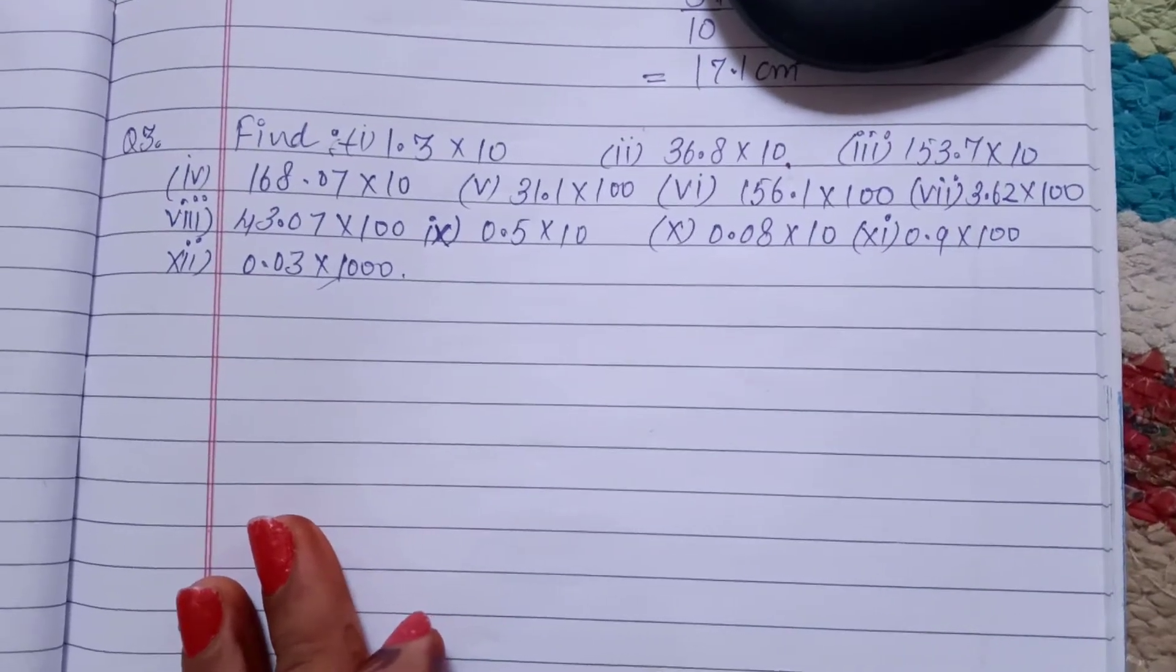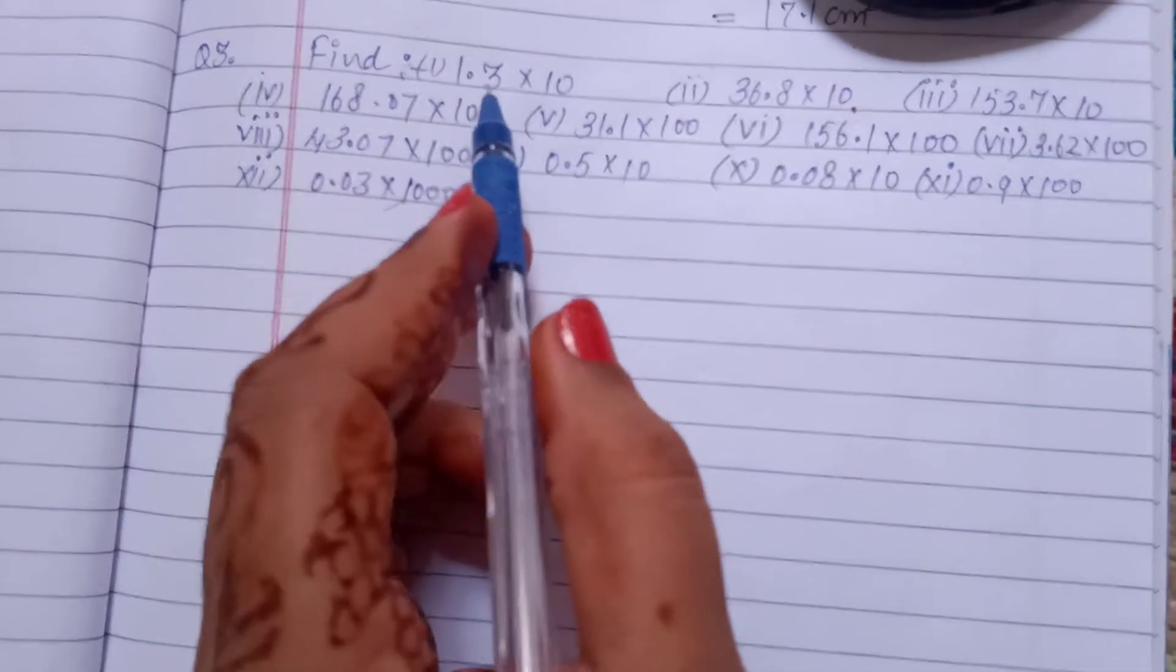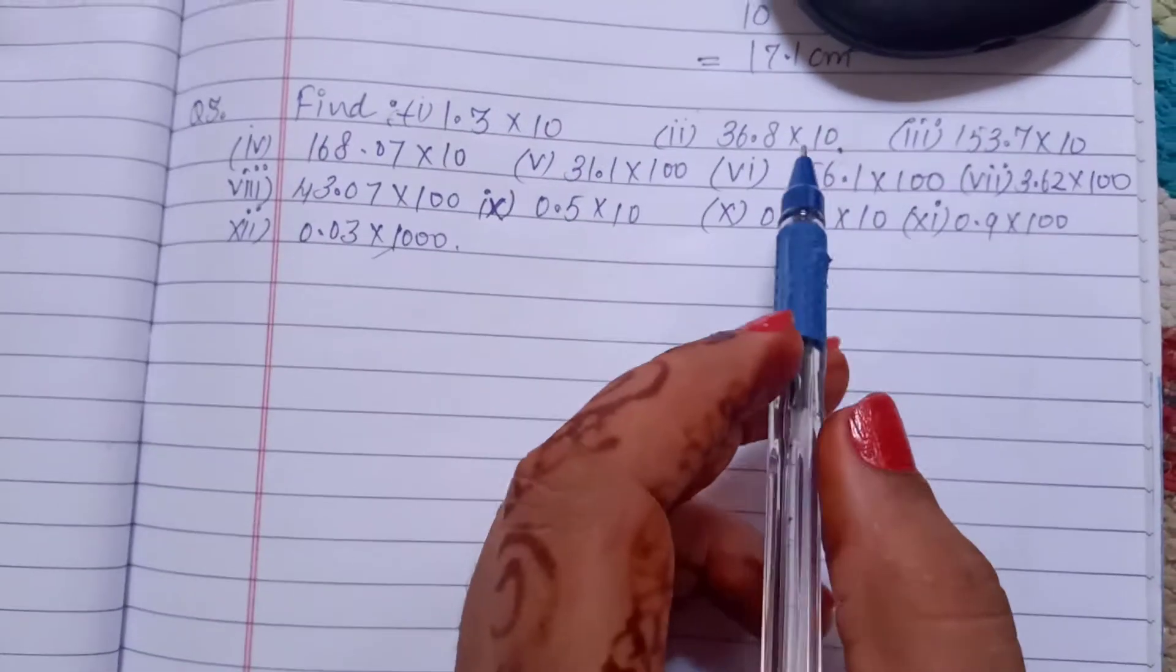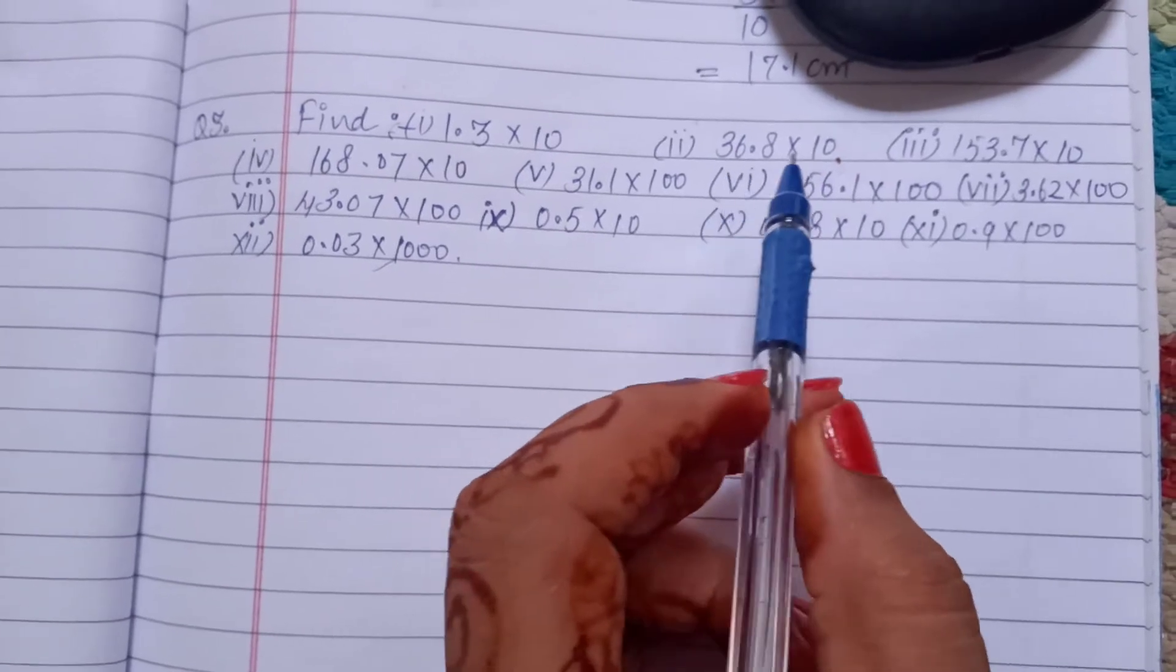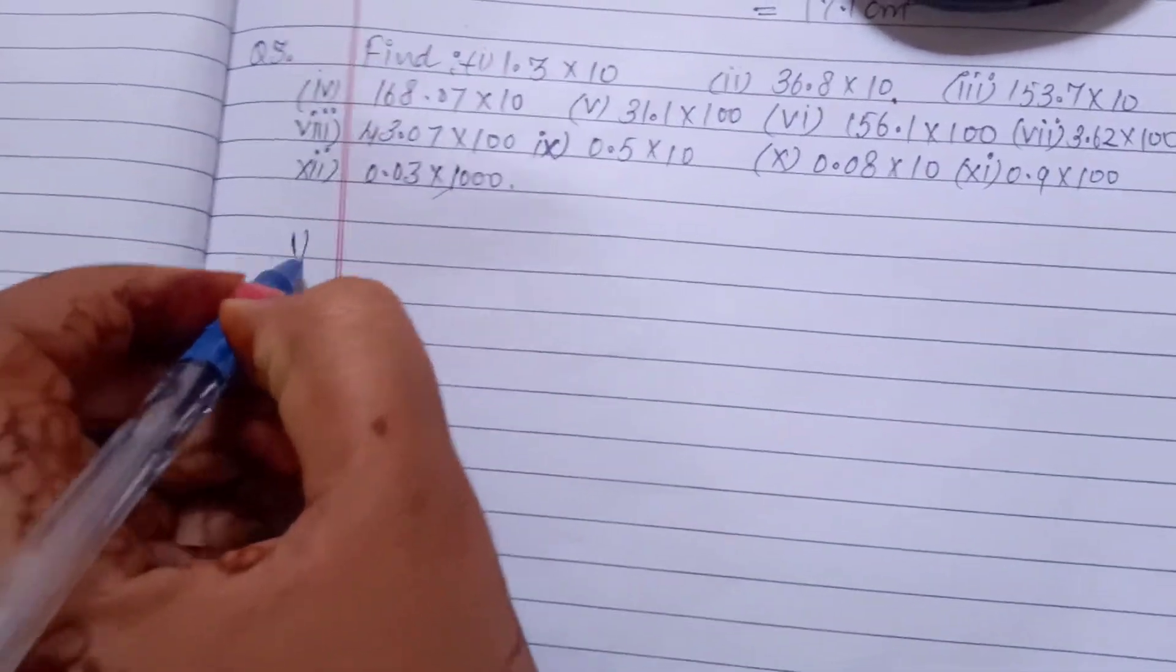Hello students, exercise 2.6, question number 3. Find - here same with the decimal, multiply with 10. In second part also multiply with 10, and first part started.